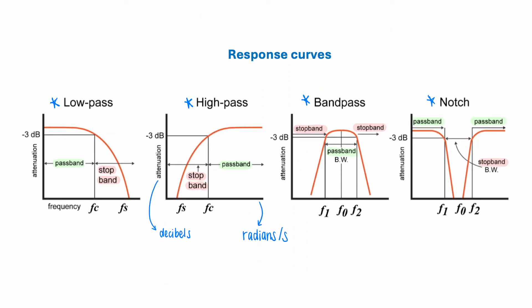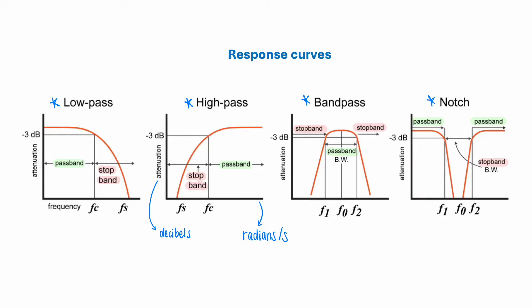Each of these filters can be plotted on response curves, with frequency in radians per second on the x-axis and attenuation or gain in decibels on the y-axis.